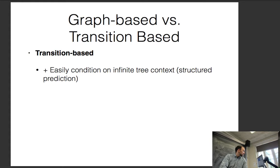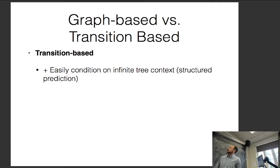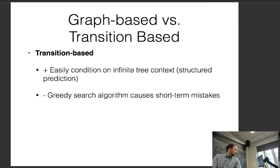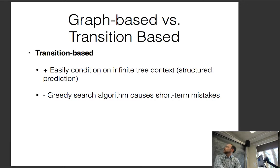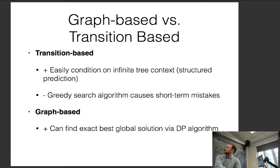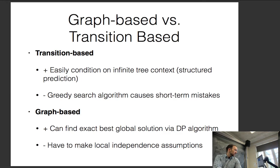Comparing their relative merits: the advantage of transition-based models is they're relatively easy to implement. You can even view a sequence-to-sequence model as essentially a transition-based parsing model. They can easily condition on infinite tree context. The problem is they have a greedy search algorithm, which can cause short-term mistakes. Graph-based models, by contrast, can find an exact best global solution via a dynamic programming algorithm, but they have to make local independence assumptions.